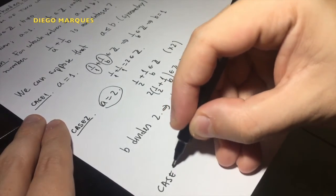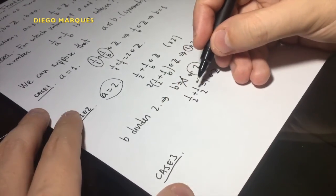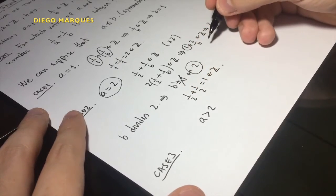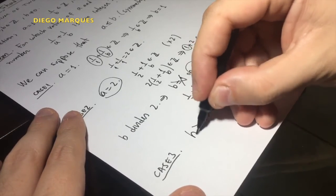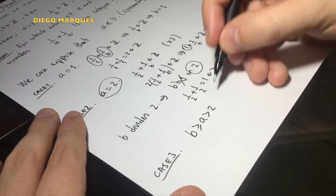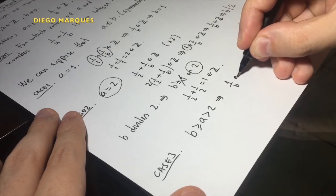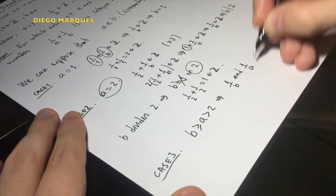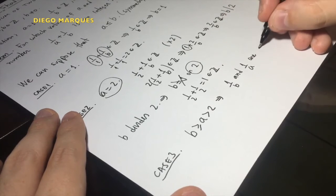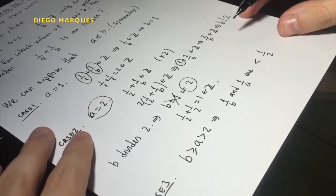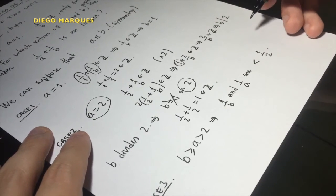And case 3 is when a is bigger than 2. In this case, b is bigger than or equal to a, so bigger than 2. This implies that 1 over b and 1 over a are less than one-half.